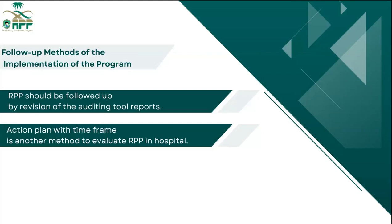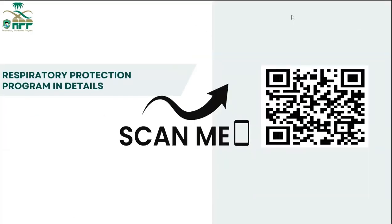This tool is already automated and available on the website. It can be used as a main agenda item in the committee. The action plan with a timeframe is another method to evaluate the RPP in healthcare facilities. All materials related to the management and maintenance of the program — including all educational materials, lectures, videos, and posters for this project — are accessible through the barcode provided.